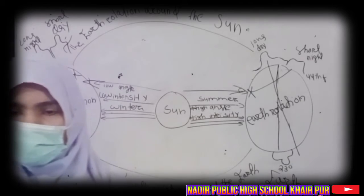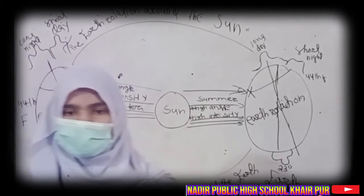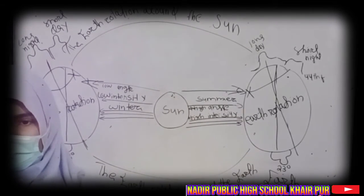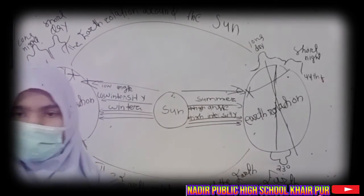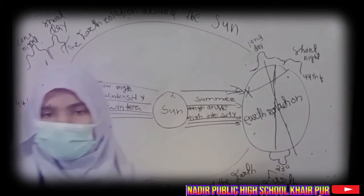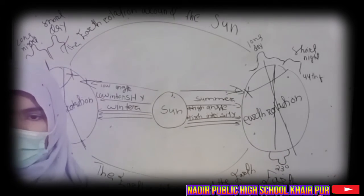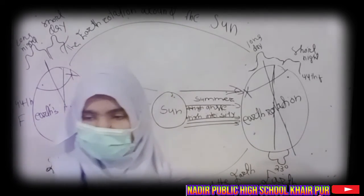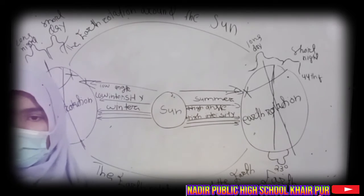The earth revolves in an elliptical orbit in the same direction. Through this revolution, the seasons are changed — summer, winter, autumn, and spring.